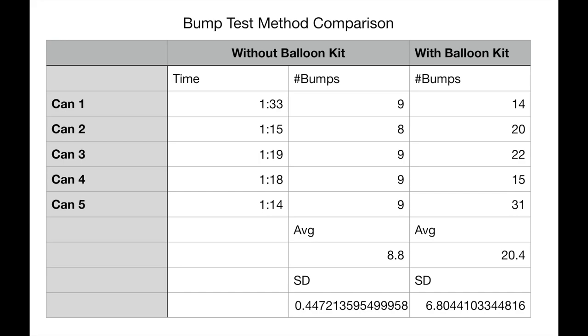Without the balloon test kit, we averaged only 9 bumps per can and with the kit, we averaged 20. Let's get started with a demo on how to use these kits.